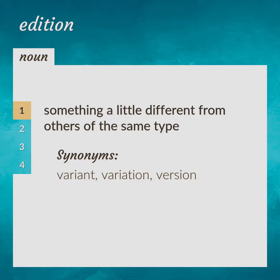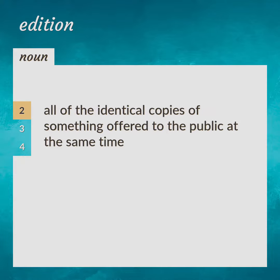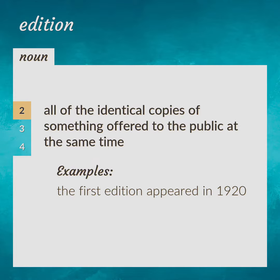Variant, variation, version. All of the identical copies of something offered to the public at the same time. The first edition appeared in 1920.